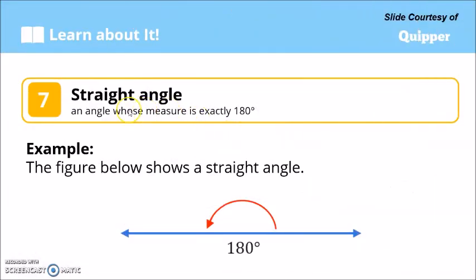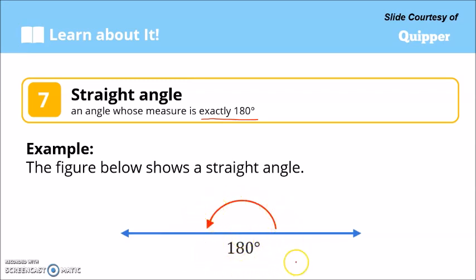Another kind is the straight angle — exactly 180 degrees, forming a straight line. The measure of this angle is 180 degrees, and it is called a straight angle.